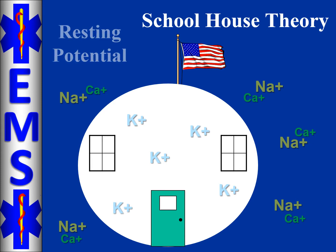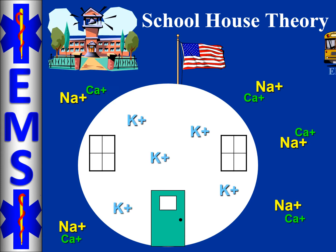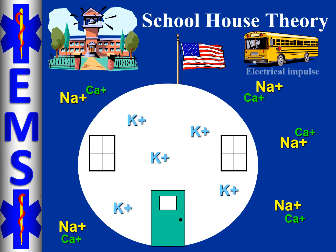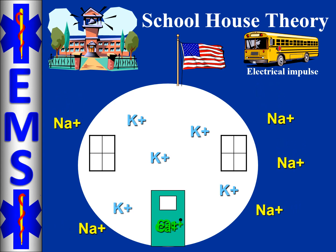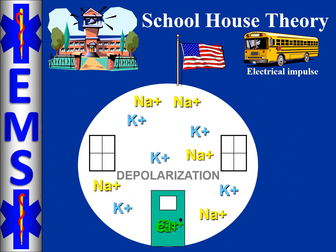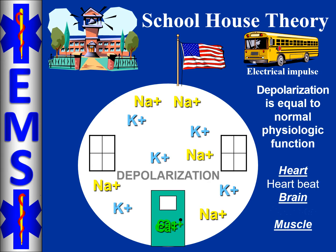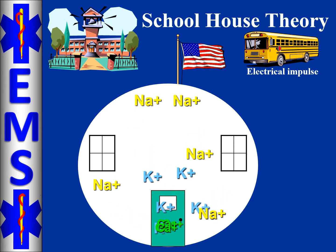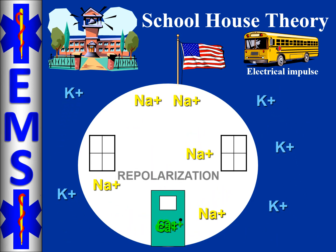When the cell is in the state of a resting potential, the school bus driver comes in the form of an electrical impulse and tells sodium to move into the cell. Calcium has the agreement to go to the door, so they do. Sodium moves in, and once we have sodium moving in, we have depolarization. When we have depolarization, that's when we get physiologic action. Then the bus driver tells potassium to move out of the schoolhouse, and when potassium moves out, that's when we have repolarization.